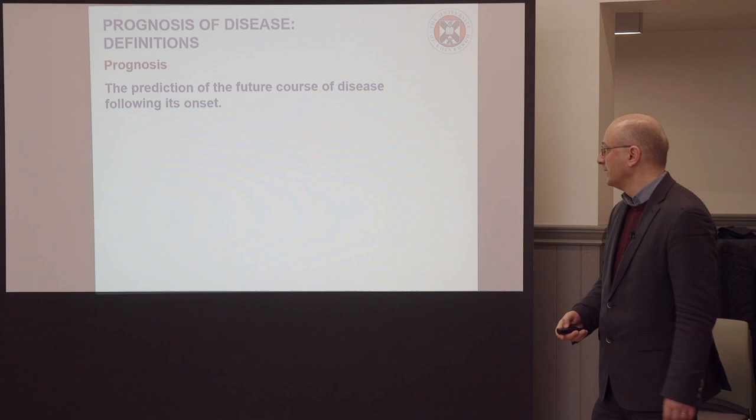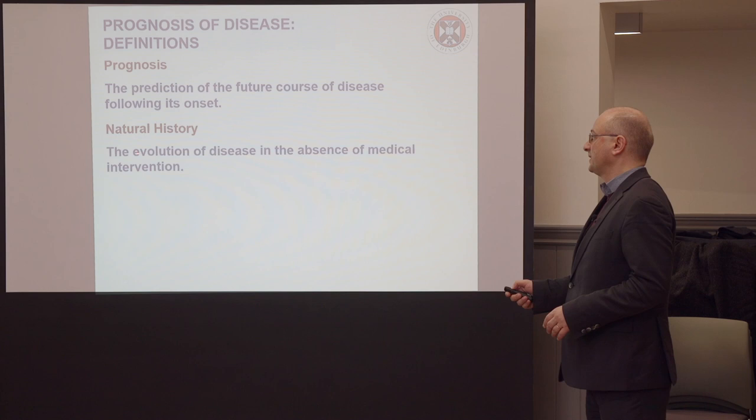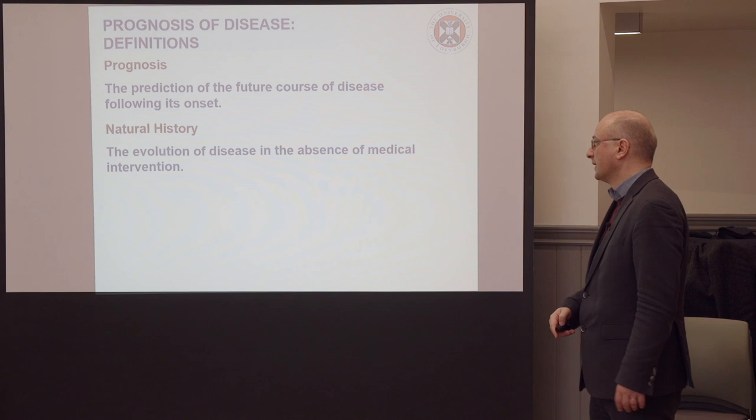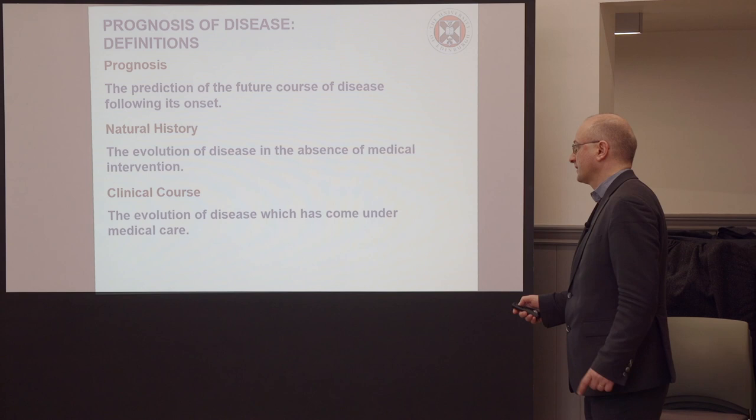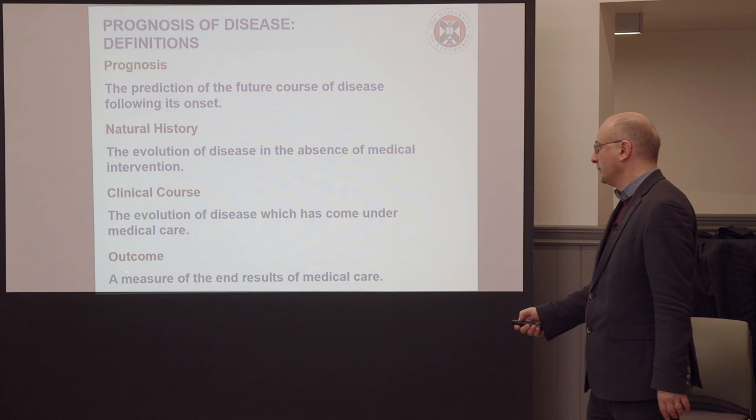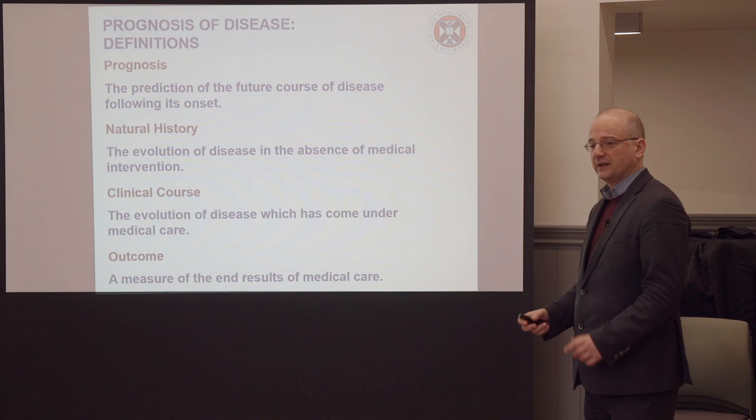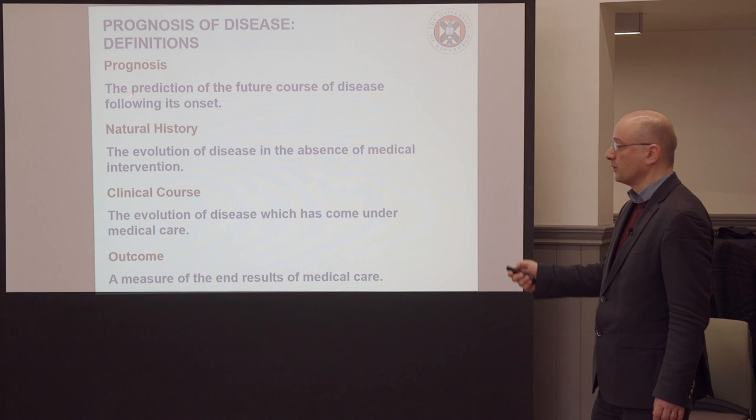This is different from natural history of disease, which is the evolution of disease in the absence of medical intervention. That's different from clinical course, which is the evolution of disease which has come under medical care. And that's different from the outcome of disease, which is a measure of the end result of the medical care. You need to clearly distinguish that these are four different things when talking about the prognosis of disease.